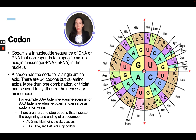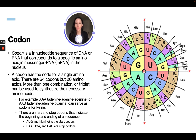A codon is a tri-nucleotide sequence of DNA or RNA that corresponds to a specific amino acid. A codon has the code for a single amino acid. There are 64 codons but only 20 amino acids, meaning more than one triplet combination can code for the same amino acid, since there are three nucleotides in each sequence.